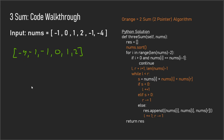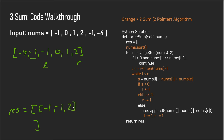For the next iteration, we fix negative one, with left and right pointers at negative one and two. We check: negative one plus negative one plus two equals zero, so we enter the else statement and append that triplet to our results array. Our results array now has the list: negative one, negative one, two — negative one being our fixed number, negative one being our left pointer, and two being our right pointer.